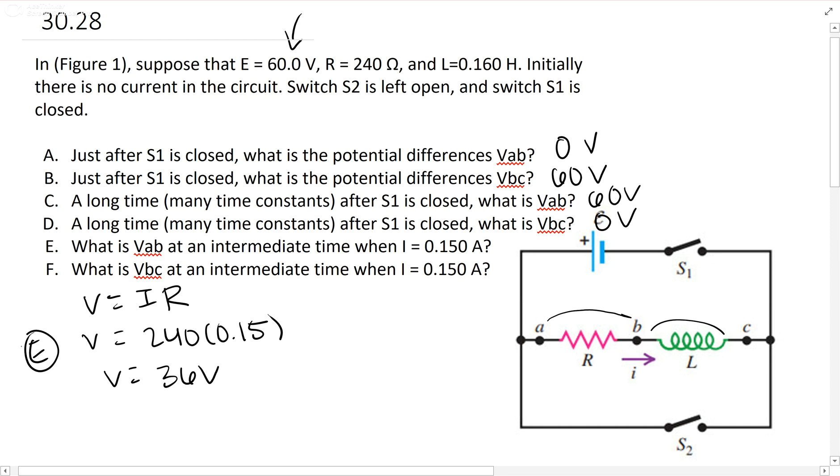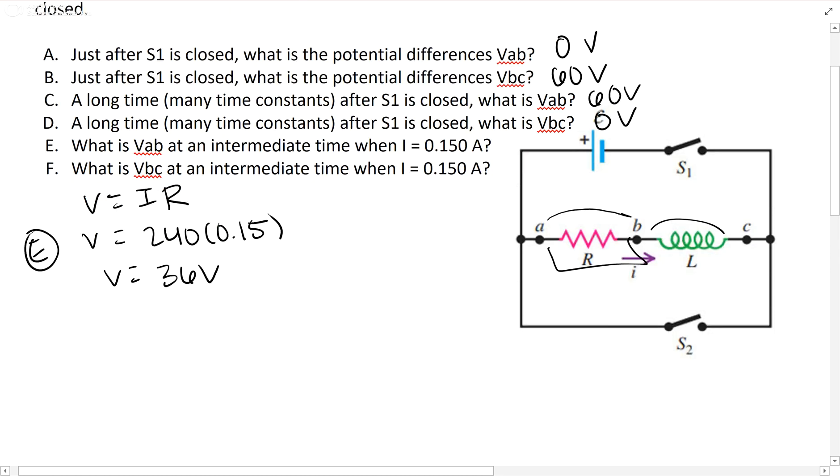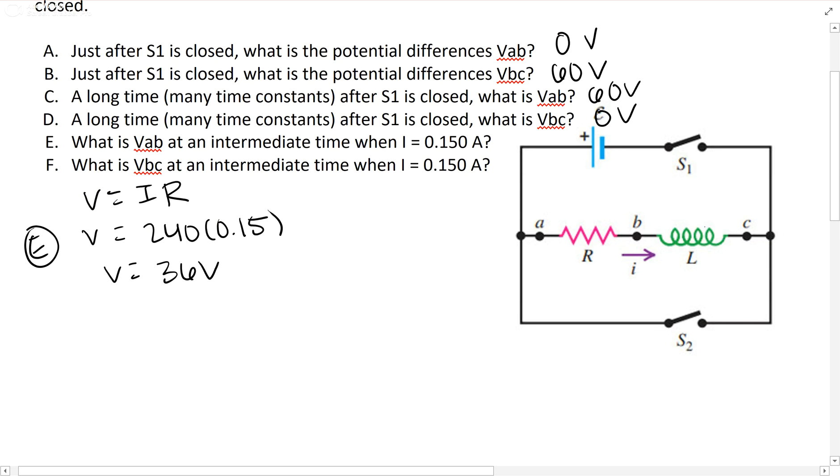F is what is VBC. This 36 volts is here. The resistance was 240. That's the resistance of that. And like we said, in a series, V total equals V1 plus V2. We know V total is 60 because that's what the battery gives us. V1 is 36. We're trying to find our V2, which is going to be 24 volts. And that's for F.